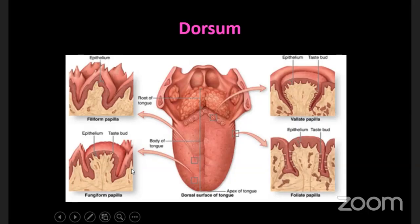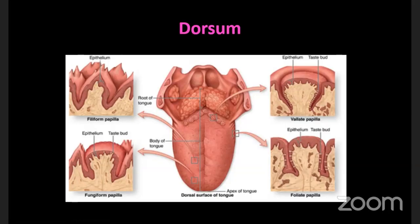The fungiform papillae have a rounded head and a narrow base, and they are seen along the margins and at the apex of the tongue. The foliate papillae are rudimentary in humans - they are leaf-shaped and well developed in rabbits but not always seen in humans.